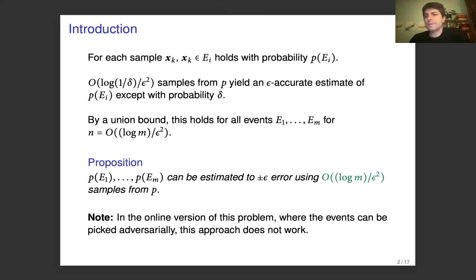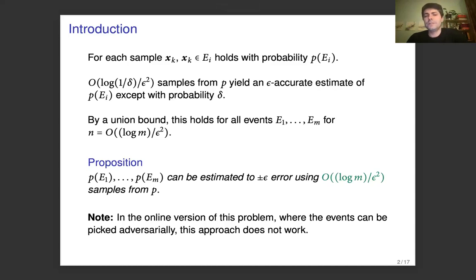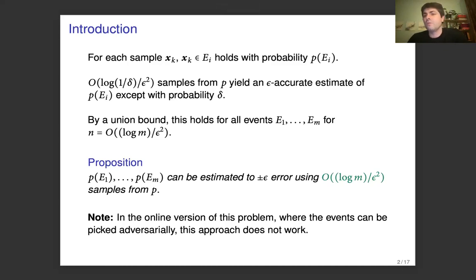Now this works in the offline version where the events e1 to em are known ahead of time. If the events can be picked adversarially, then we can no longer apply the union bound in the analysis, so this approach does not work.